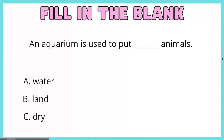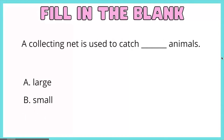An aquarium is used to put blank animals. A. Water. B. Land. C. Dry. A collecting net is used to catch blank animals. A. Large. B. Small.